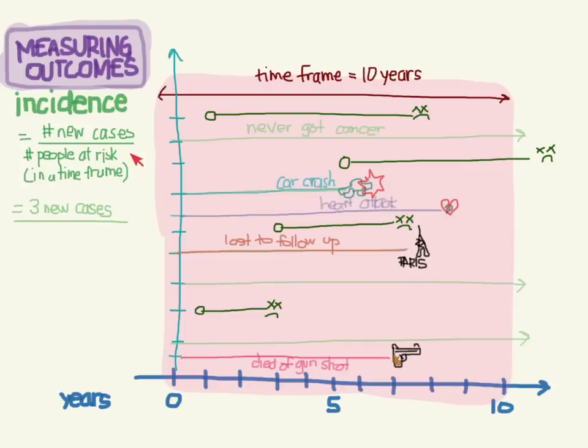The next thing we need to do is figure out what to put in the denominator - who are the people that are at risk? This person who died from a car crash was at risk here, then they died, so they're no longer at risk for this portion. Similarly, this guy who had the heart attack was at risk here, but then he died and was no longer at risk. This person moved away, so who knows what happened - they may have gotten cancer while they were in Paris and died, we just don't know. During our study, we're losing some of our patients to other causes of death and we're losing them to follow up as they move away.